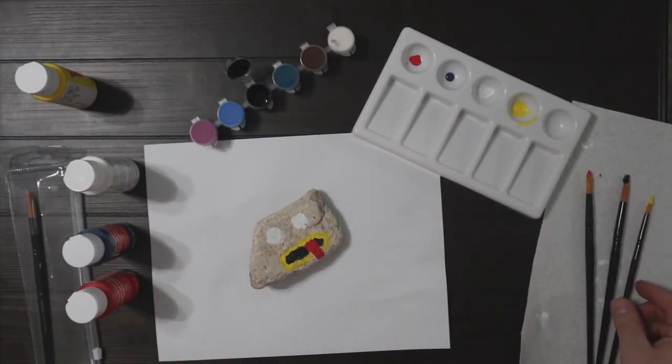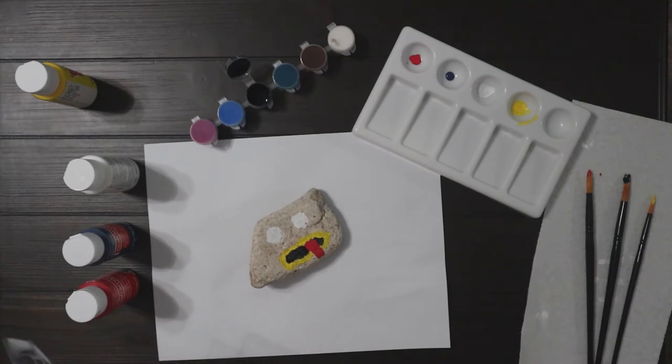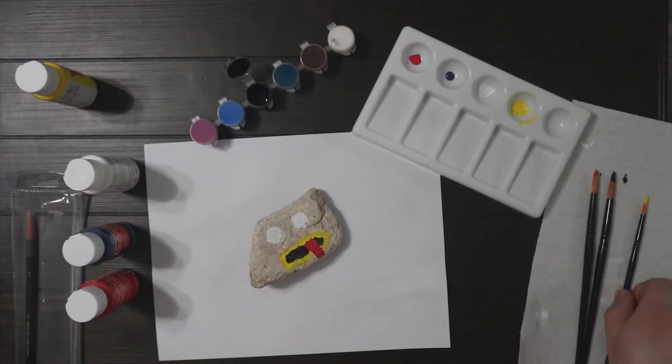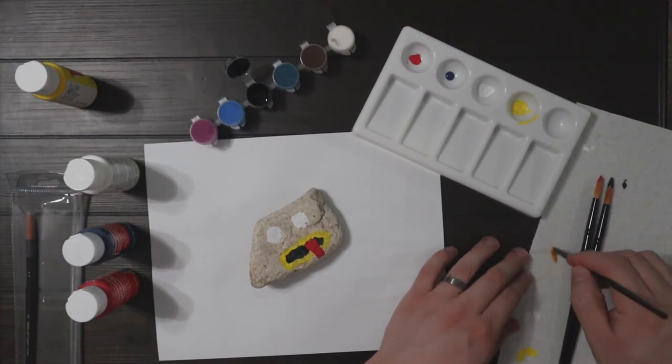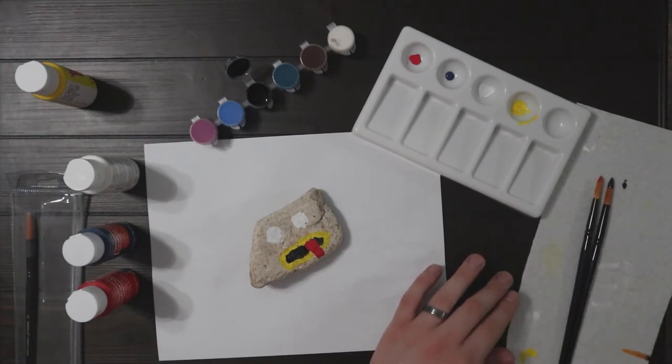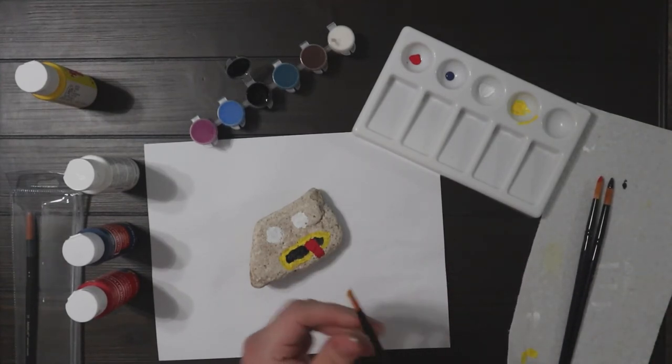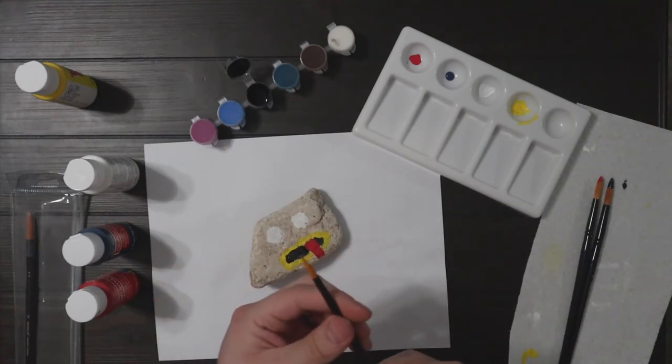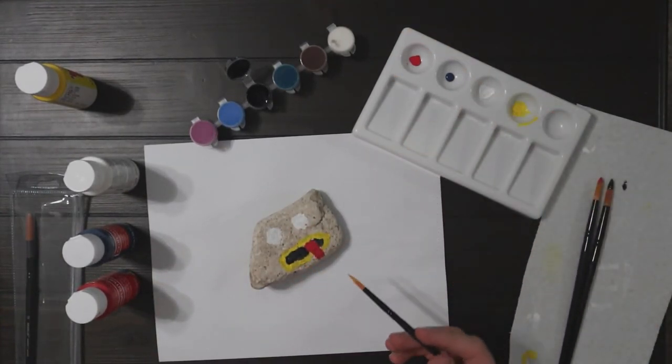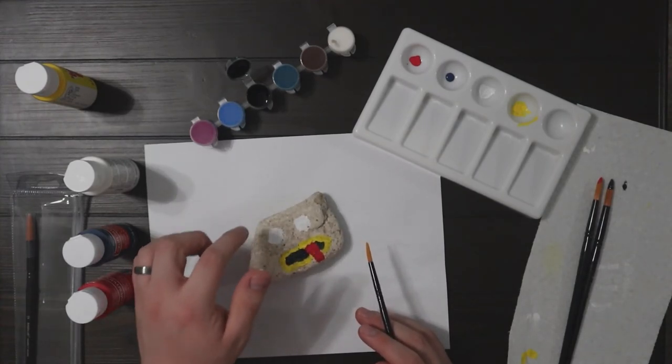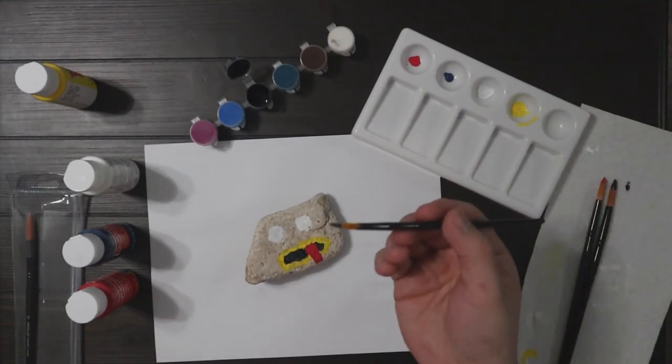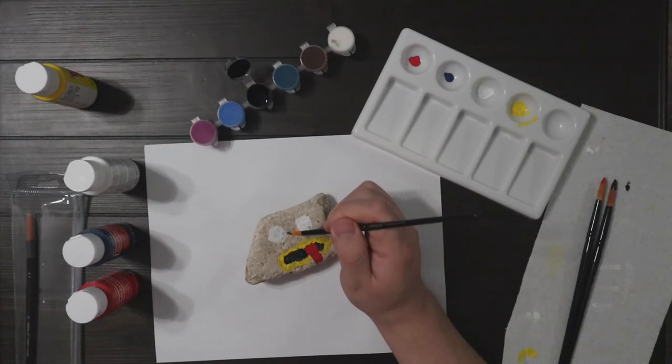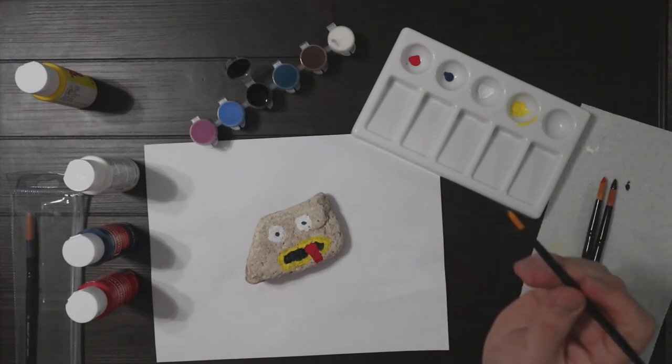All right, here we go. And now we're actually going to use the yellow brush. Just kind of clean it off real quick. Clean it off, make sure it's good. And we're going to use the blue. You want the white to be dry though. Just going to do a little dot. Here we go.